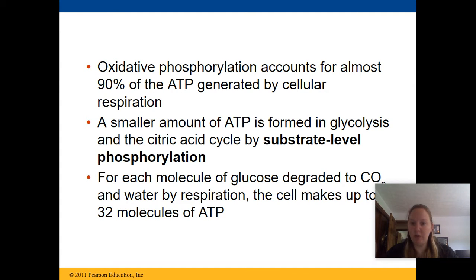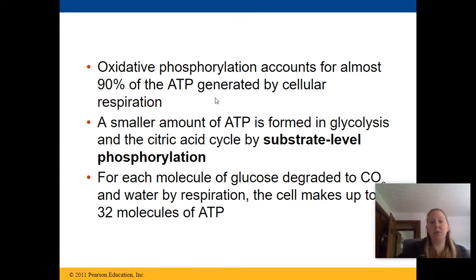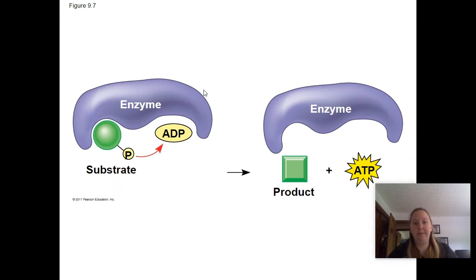For each molecule of glucose that gets degraded into carbon dioxide and water by the whole respiration process, the cell can make up to 32 molecules of ATP, and 90% of that is done during oxidative phosphorylation.